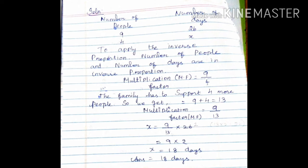9 people have enough food to last 26 days. The family has to support 4 more people, so 9 plus 4 equals 13 people. Multiplication factor is 9 by 13. So x equals 9 by 13 into 26. Simplify: 13 into 2 is 26, so 9 by 13 into 26 equals 18. The food will last 18 days for 13 people.